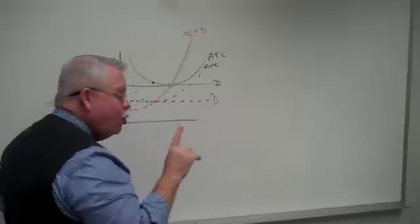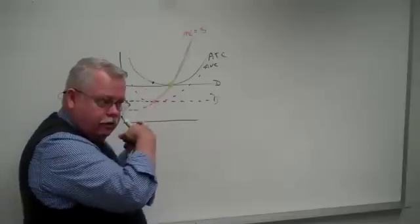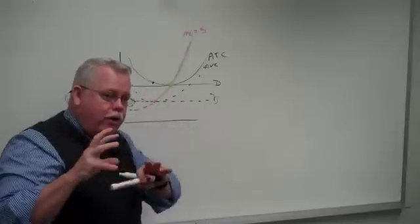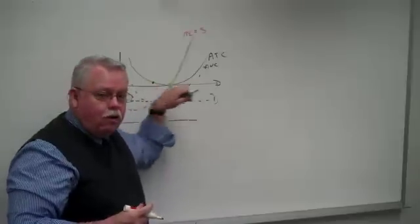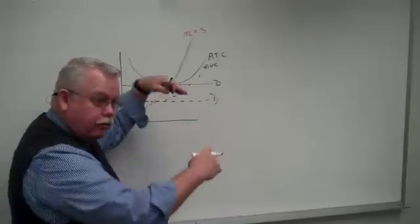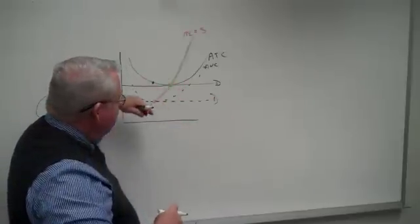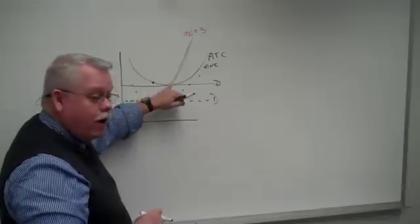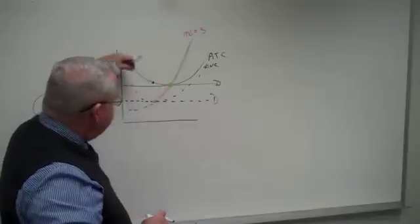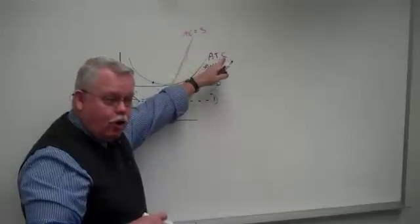Now I'm going to draw one quick line on here just to anticipate. When we go into monopolistic competition the demand curve is no longer perfectly elastic. It's got some slope to it. And in the long run, it will still become tangent to the average total cost curve.